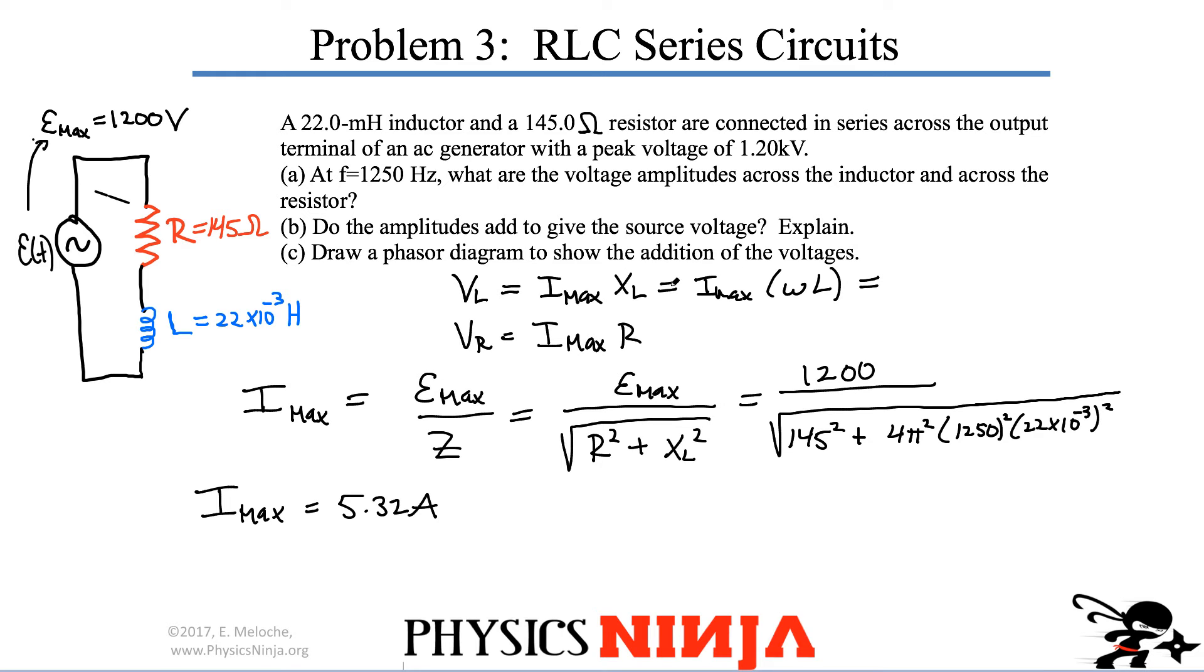So the amplitude of the voltage across the inductor, I know all my quantities now. You simply plug and chug the numbers. What I get is 919 volts for the voltage across the inductor, the maximum. And the maximum voltage across the resistor, substitute the numbers here, 771 volts.